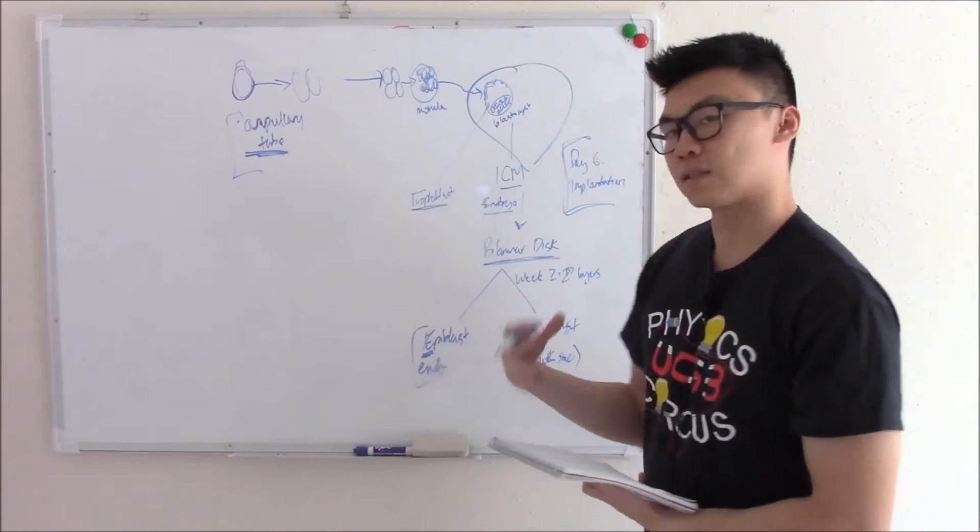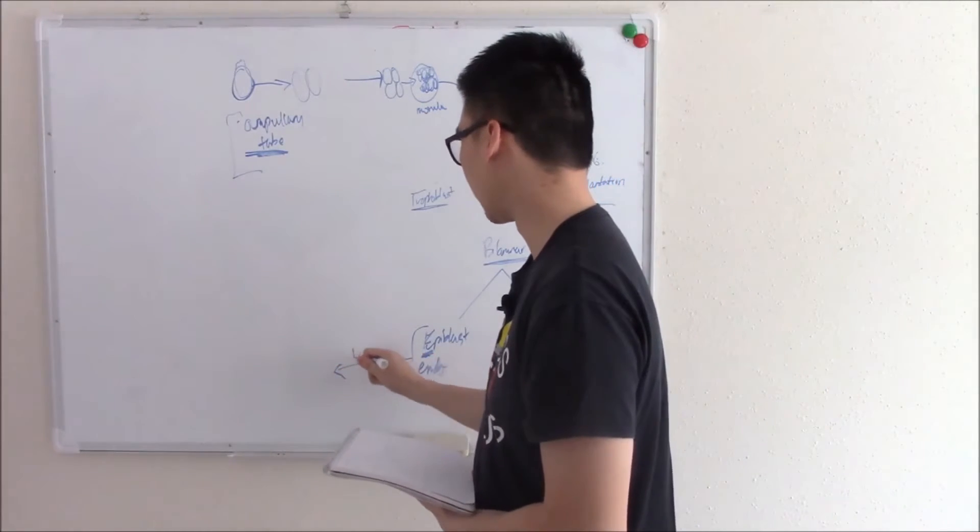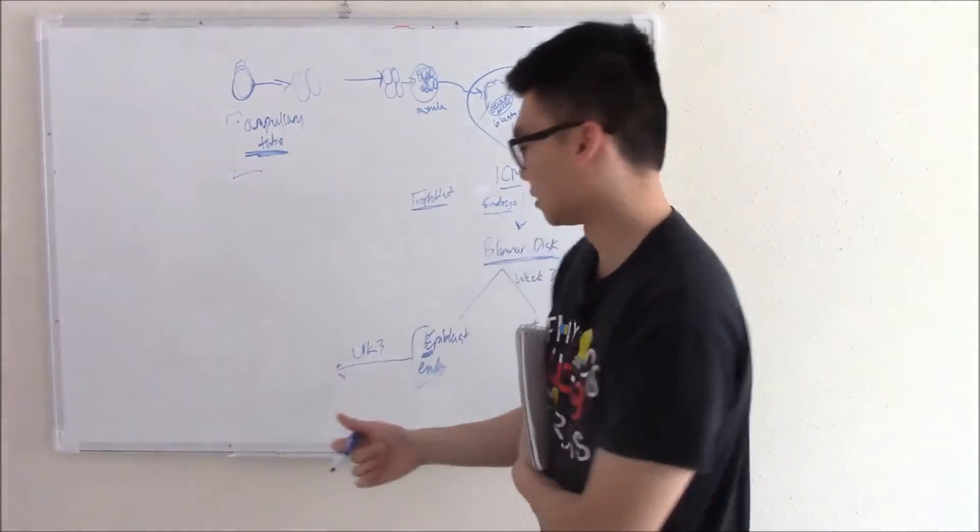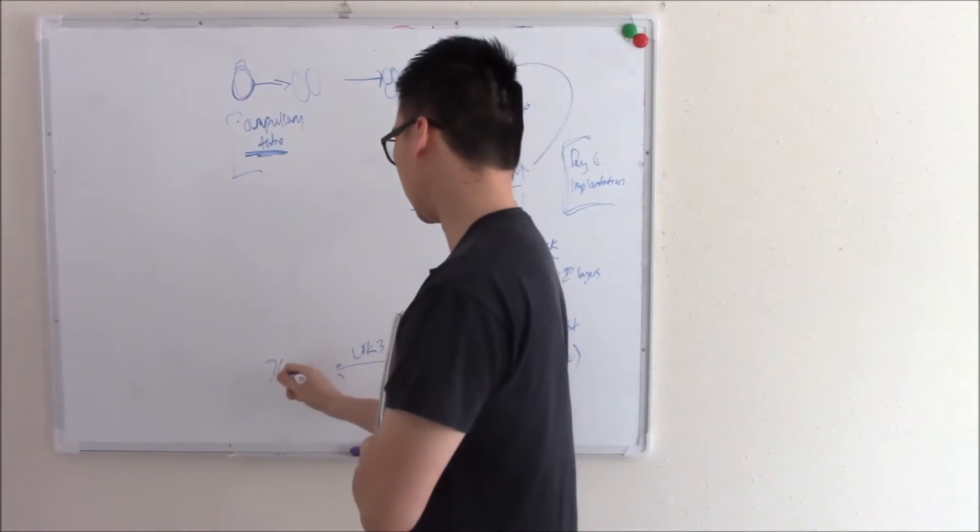We're going to follow the epiblast because we're following the embryo for now. That epiblast will continue to grow. And on week three, that epiblast becomes three layers. Week three, three for week three, and three for three layers.